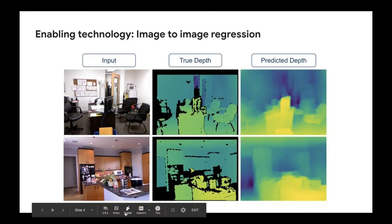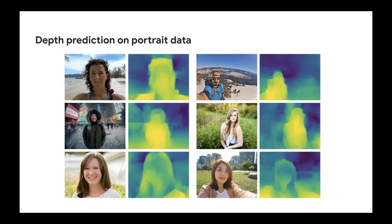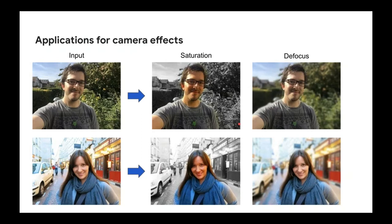One classic example of image-to-image regression is taking a natural scene picture and predicting the true depth of that scene — knowing the walls are further back, the desk is closer — and building a machine learning model to predict that depth image from the input image. These models can do a decent job because they learn something about the natural world, the same way you and I can infer depth. You've probably seen applications of this on portrait data: algorithms figure out the foreground of a selfie, allowing effects like desaturating or defocusing the background.